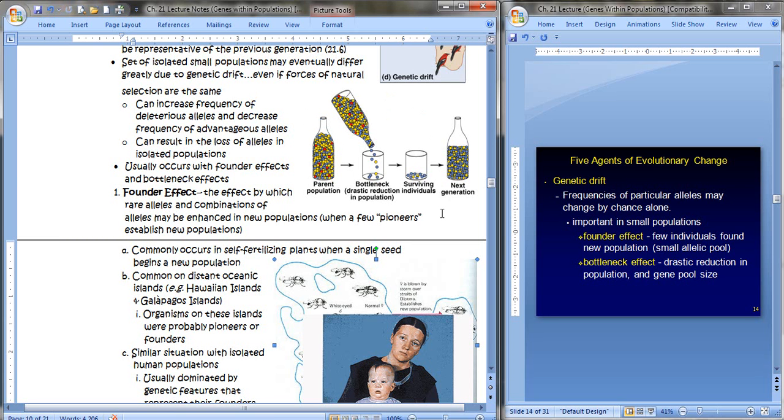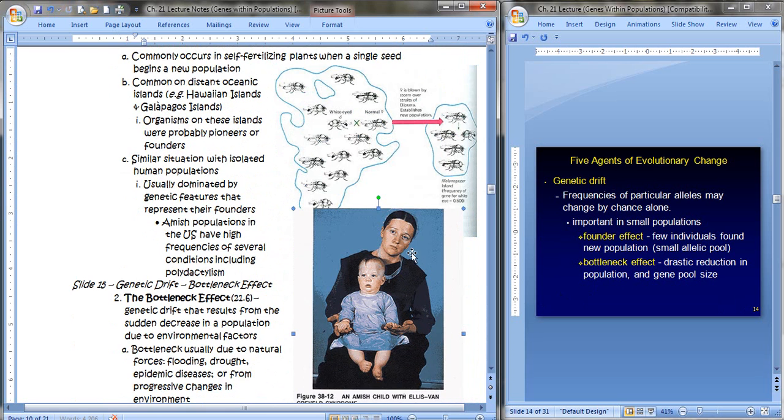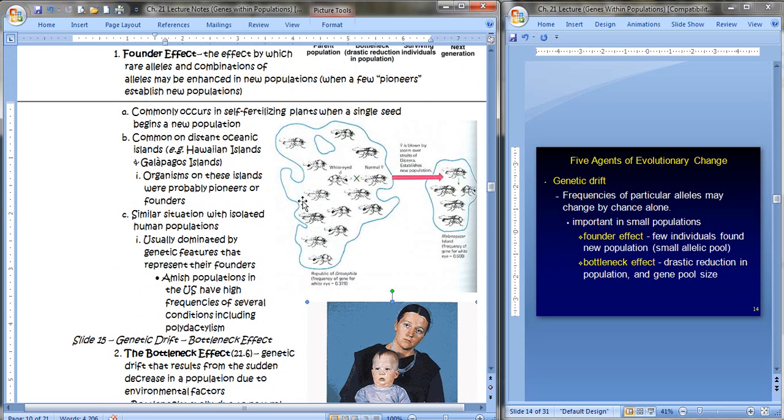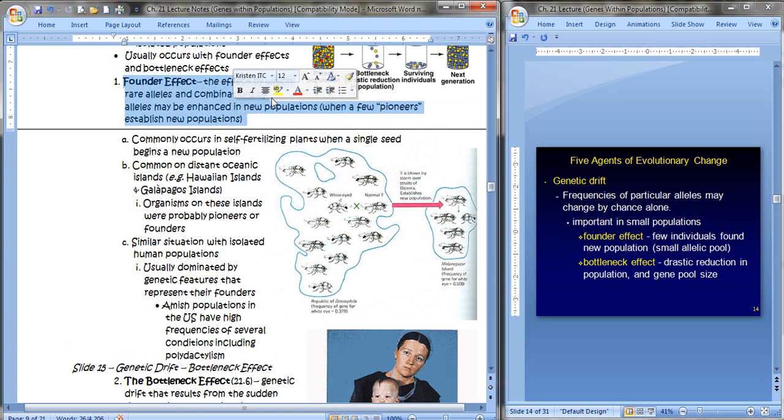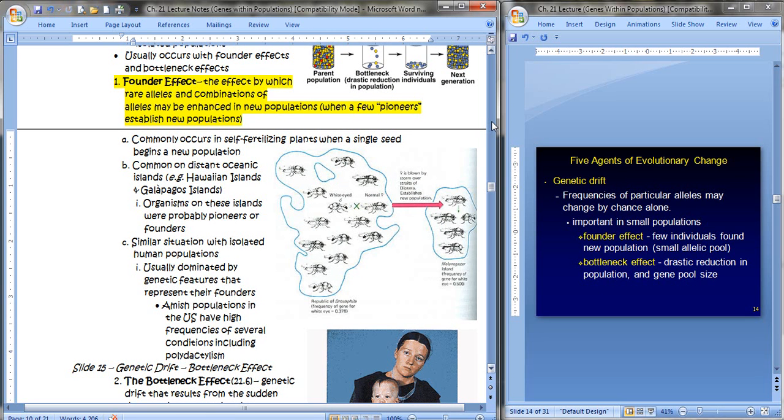This can increase the frequency of deleterious alleles and decrease the frequency of advantageous alleles and can actually result in the loss of alleles in isolated populations. And it usually works with founder effects and bottleneck effects. And this is an image of the bottleneck effect that you might remember seeing from biology. But we'll get back to that one. I'd like to start with the founder effect. So the founder effect, the effect by which rare alleles and combinations of alleles may be enhanced in new populations when a few pioneers establish new populations. Another way of saying it is that the gene pool of founding population is not reflective of the source population.